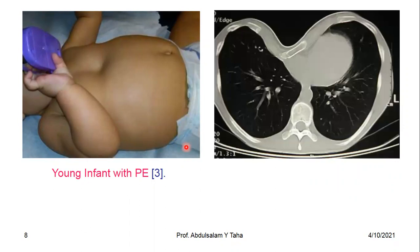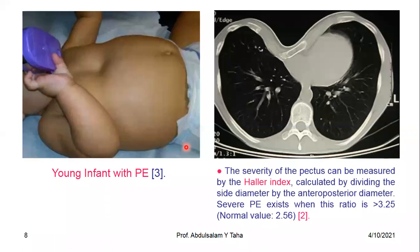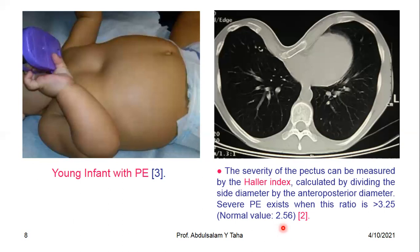There are many imaging modalities used to assess or evaluate the anomaly, most importantly a CT scan of the chest. The severity of the Pectus anomaly can be measured by the Haller Index, calculated by dividing the transverse diameter of the chest over the anteroposterior diameter. Severe Pectus Excavatum exists when this ratio exceeds 3.25, as the normal value is 2.56.